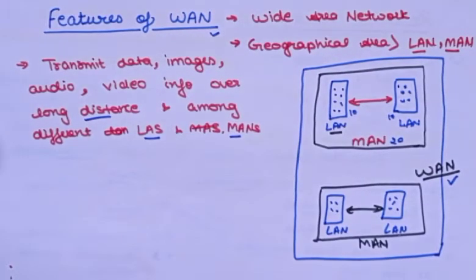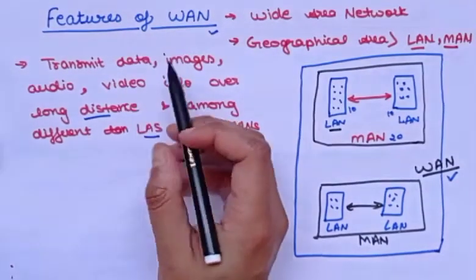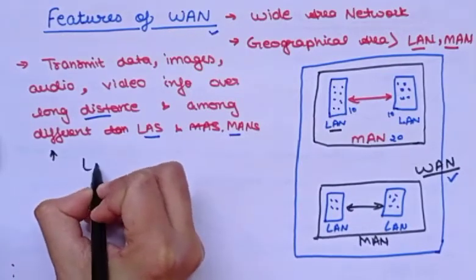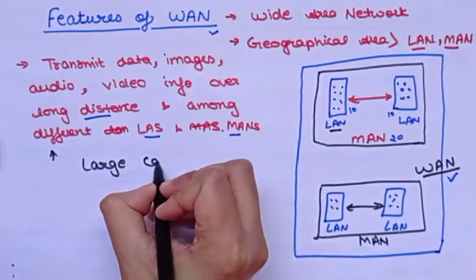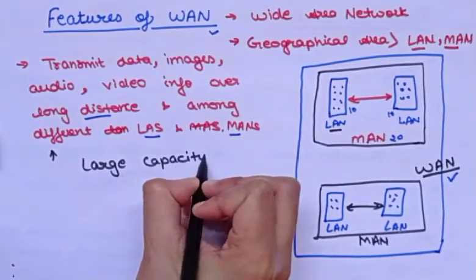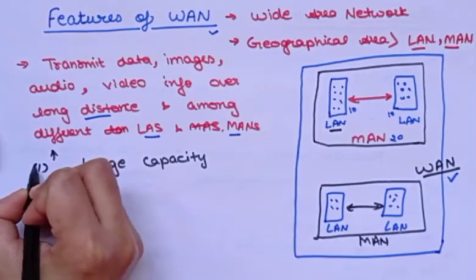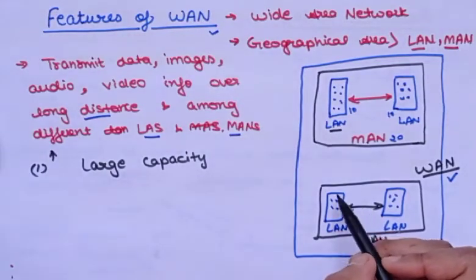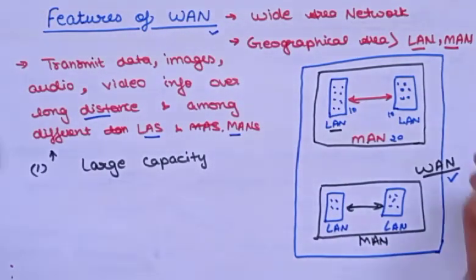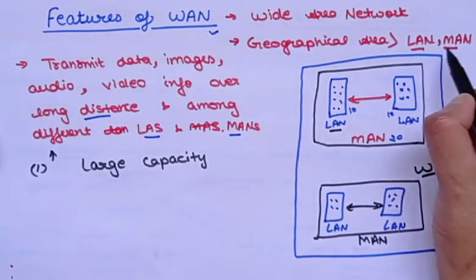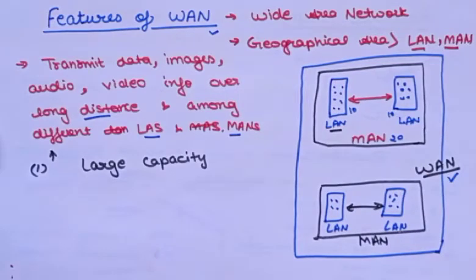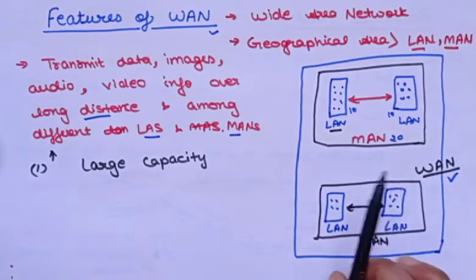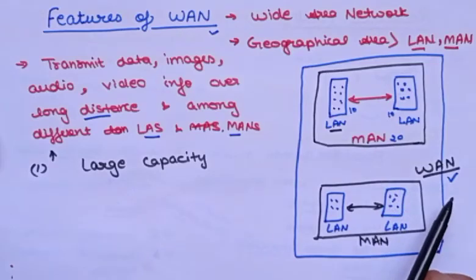So this is the first feature of WAN: large capacity. WAN has more capacity to handle a larger number of computer systems if we compare it with LAN. So if we compare it with LAN, then WAN capacity is greater.